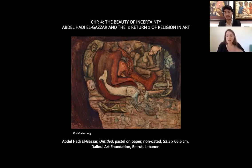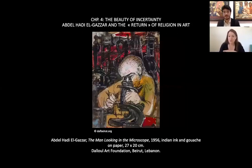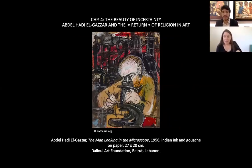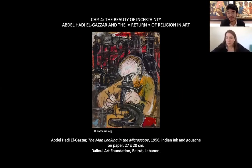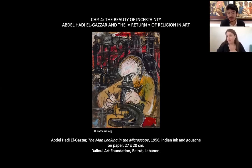After this, in the late forties and early fifties, he turns to the mystical images, kind of in between these two paintings. Then in the fifties, he starts turning away from images of mystical practices in the Islamic quarters of Cairo towards more international, worldwide global images of science and technology.